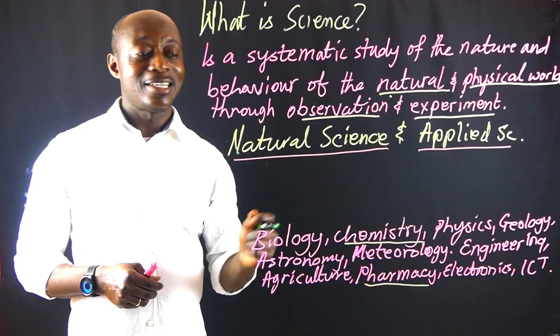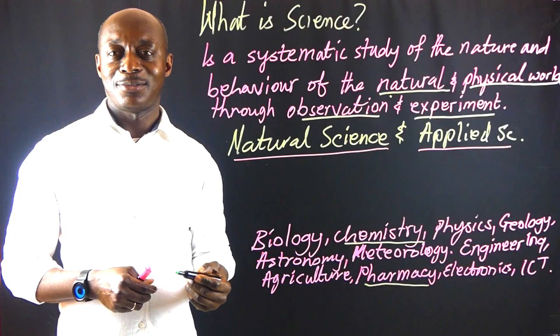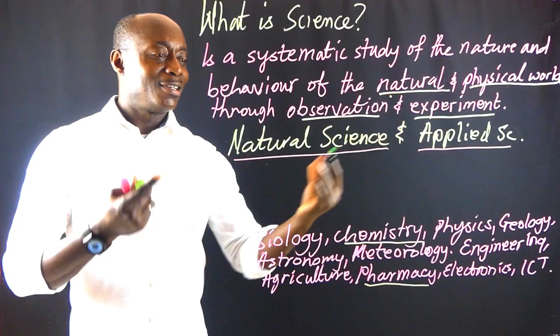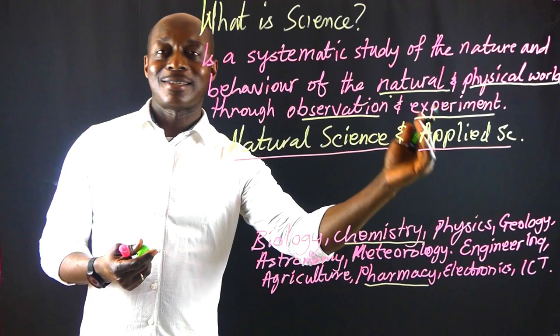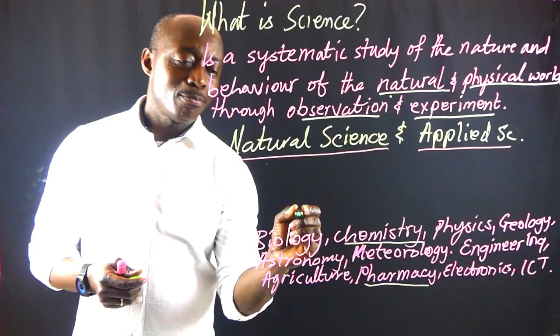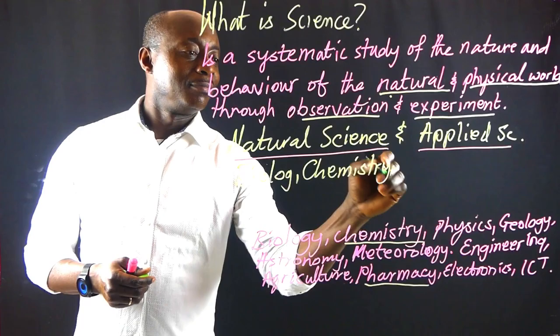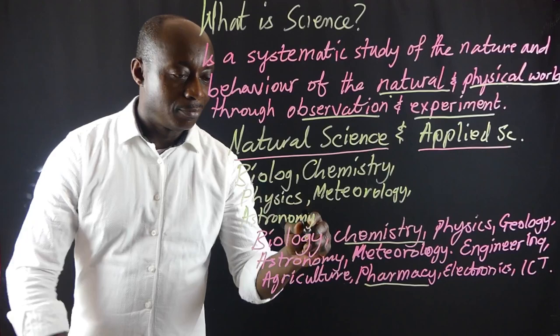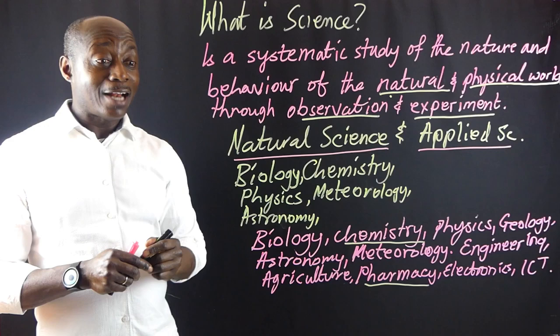So with this explanation, you can help to group the various subjects into natural and applied science. Definitely we'll have subjects like biology — natural science. These are typical examples of natural science: biology, chemistry, physics, meteorology, astronomy, and so on and so forth.